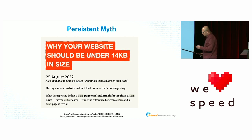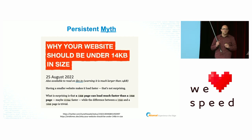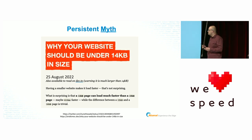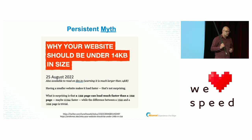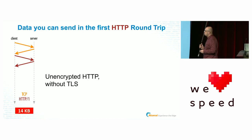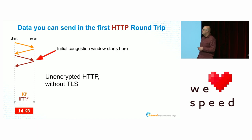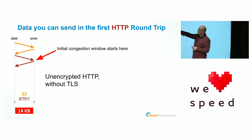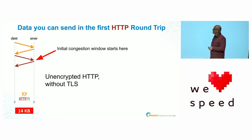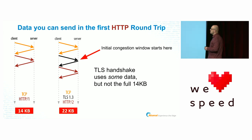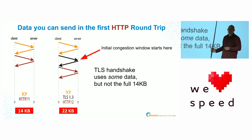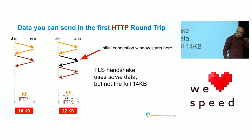What this is saying is kind of true — if you can fit everything inside that very first round trip of the slow start algorithm, your site is going to be faster. Practically, I have big problems with the number 14. That's only if you were using unencrypted HTTP — because then you run the HTTP request right after the TCP handshake with the congestion window available. We no longer do that; we properly use TLS for security. TLS has its own handshake that also uses the initial congestion window, typically a little less than 14 kilobytes.